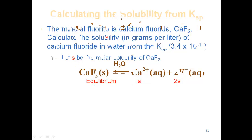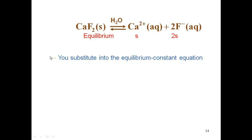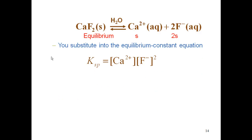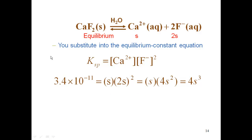These values of S and 2S are related through the equilibrium constant Ksp. So Ksp equals the concentration of calcium to the first power times the concentration of fluoride to the second power. Plugging in our values — S for calcium and 2S for fluoride — gives 3.4×10⁻¹¹ equals S times (2S)². You've got to square the whole term, so 2 is squared as well as S, meaning S times 4S² gives 4S³.